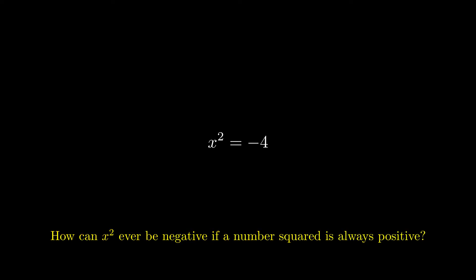This is where imaginary numbers come in. If we let i be the square root of negative 1, we can then write the square root of negative 4 as plus or minus 2i. This is an imaginary number, any number that contains a factor of the square root of negative 1, or i.